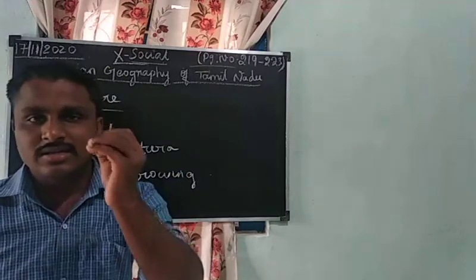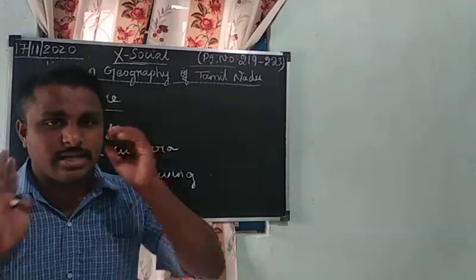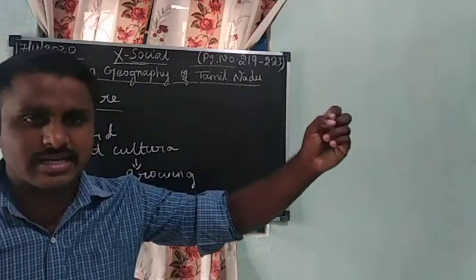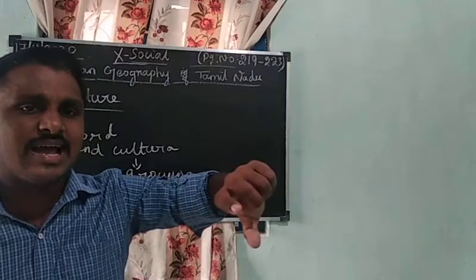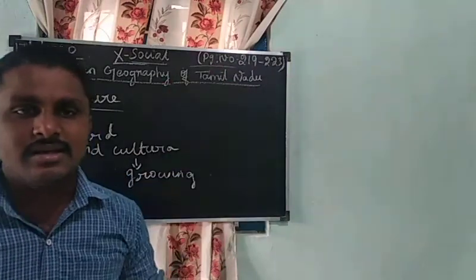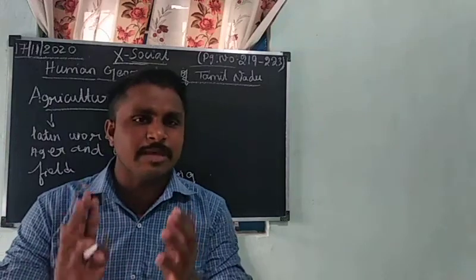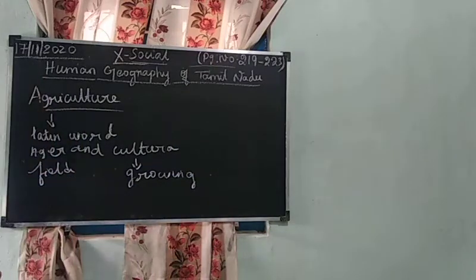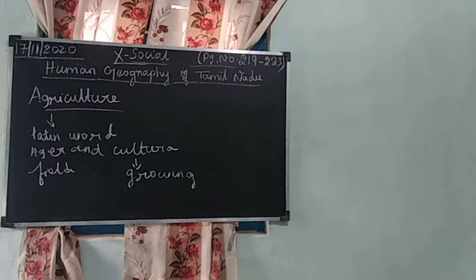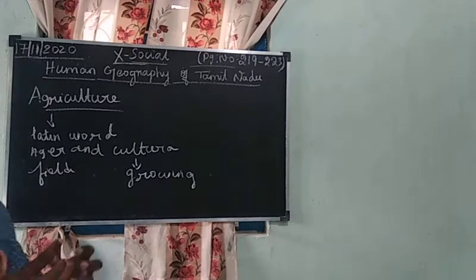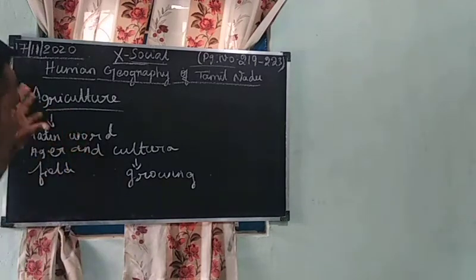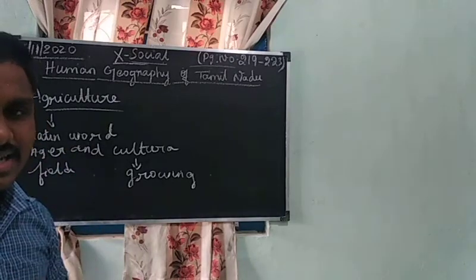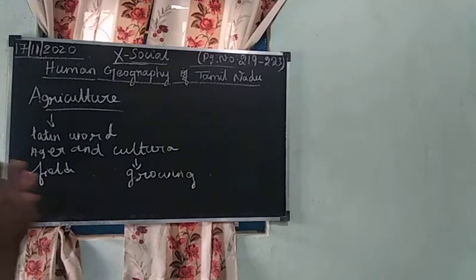Agriculture is mostly done in fertile soil and near riversides. Before, people lived a nomadic life, moving from one place to another and living in jungles. Later, people settled near rivers and started agriculture. Agriculture is based on many products like paddy, millets, and pulses.